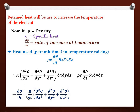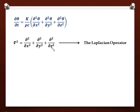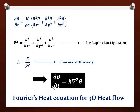After simplification we obtain: ∂θ/∂t = (k/ρc)(∂²θ/∂x² + ∂²θ/∂y² + ∂²θ/∂z²). The operator ∇² = ∂²/∂x² + ∂²/∂y² + ∂²/∂z² is called the Laplacian operator. The factor k/ρc is the thermal diffusivity (h), introduced in the second lecture. Substituting these, the final form of the heat equation for 3D heat flow is ∂θ/∂t = h ∇²θ. This is the Fourier heat equation for 3D heat flow.